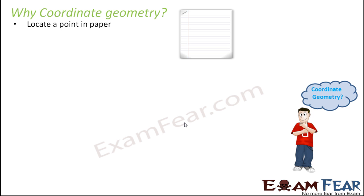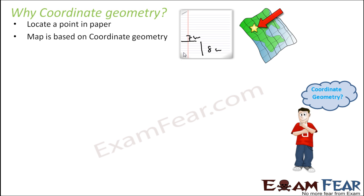There are various applications of coordinate geometry. First, it helps you locate a point. For example, if I locate a point and want to pass that information to someone else without passing an image, I can use a convention. If a point is located 8 centimeters and 7 centimeters from the edges, you can locate that point again using coordinate geometry. The whole map system is based on coordinate geometry.